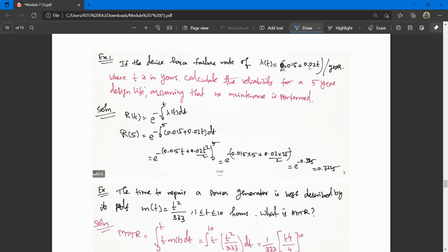If a device has a failure rate of lambda(t) per year, where t is the years, calculate the reliability for a 5-year design life assuming no maintenance is performed, so m equals 0.